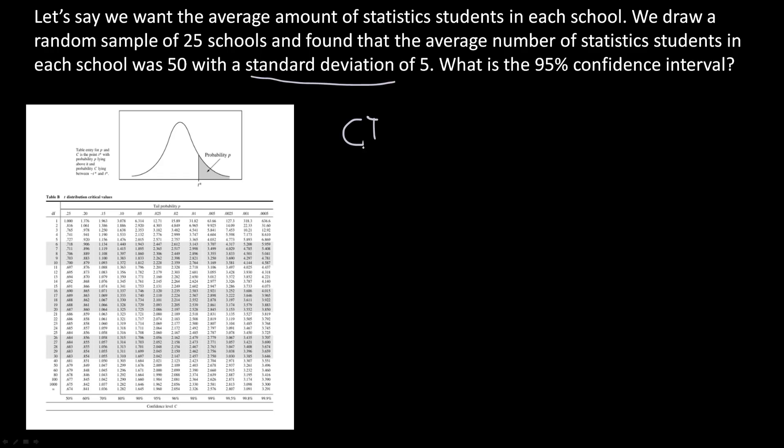So for that, the equation is that the confidence interval is equal to the average amount of statistics students in each school from the sample plus or minus the T star value times the standard deviation of the sample over the square root of the sample size. So to fill in these values, it would be 50 plus or minus T star times the standard deviation, which is going to be 5, of the sample over the square root of the sample size, which was 25 schools.